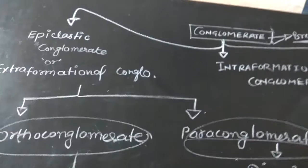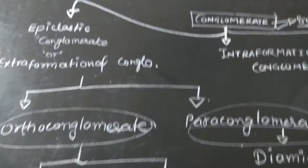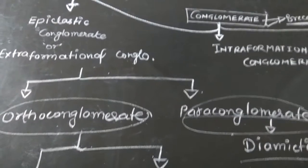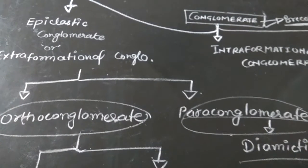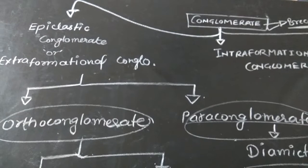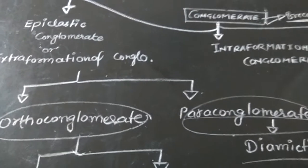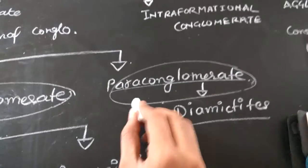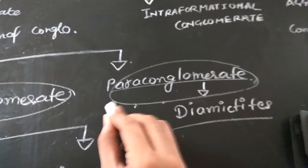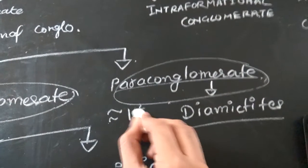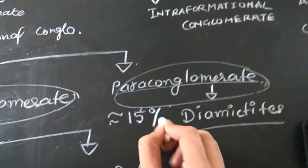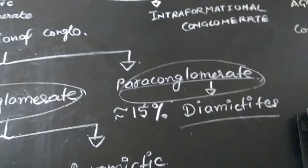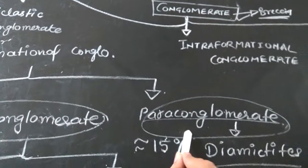Under extraformational conglomerate there are two main types: orthoconglomerate and paraconglomerate. Orthoconglomerate has less than 15 percent matrix content, while paraconglomerate has roughly 15 percent or more matrix content. These two are the major categories based on matrix content, tectonic setting, and roundness of clasts.